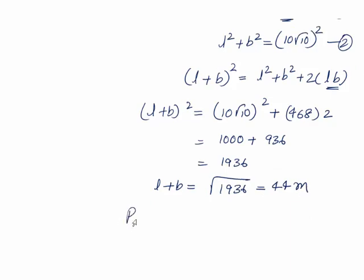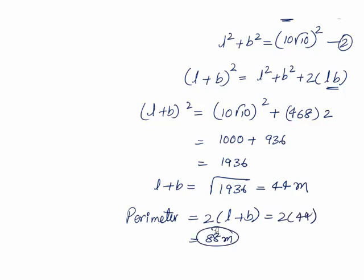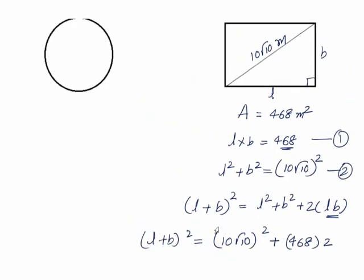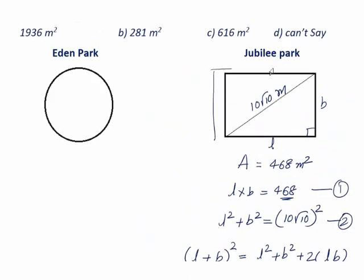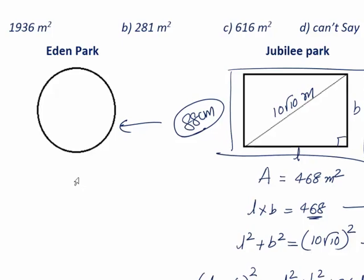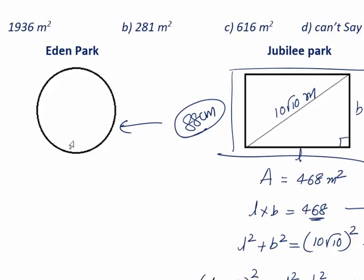So we can understand the perimeter of this field is 2 into L plus B which makes 2 into 44, 88 meter. We found the perimeter of this is 88 meter. Same is carried here. So we can understand the perimeter of this thing is also 88. Now let's try to find out the R.